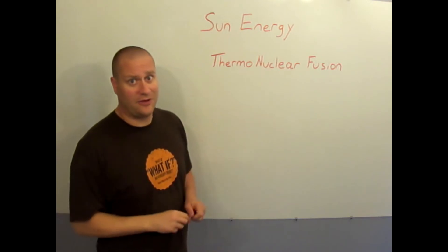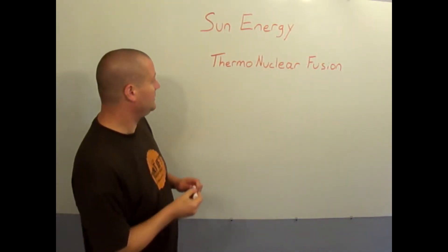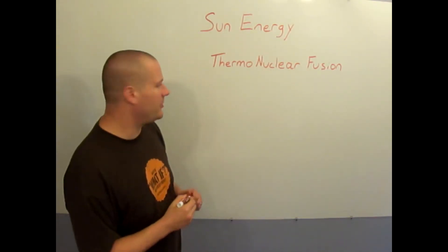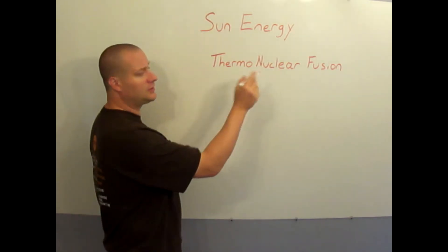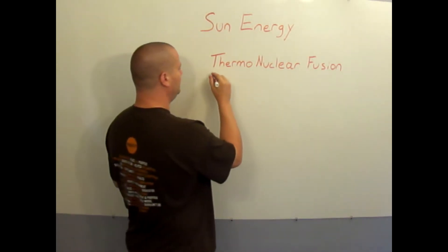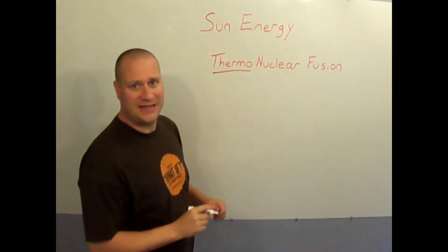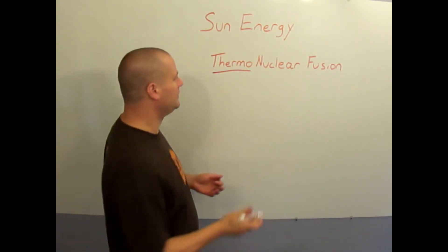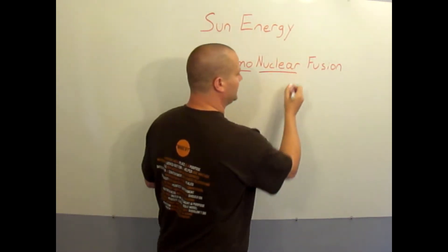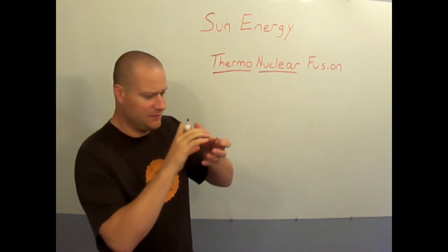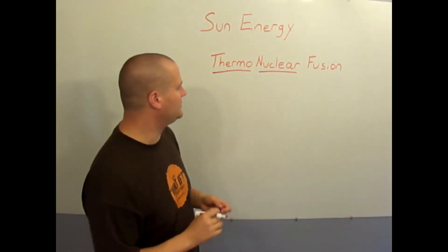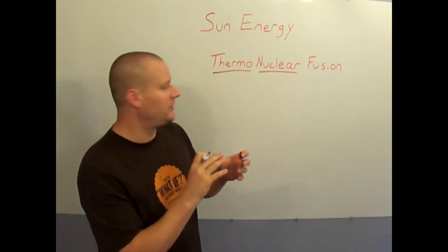So where does the sun get all this energy you might wonder? Well it's a little process that I do want you to memorize the name of, called thermonuclear fusion. Thermo has to do with the word heat, like thermos or thermometer. Nuclear is the center of an atom, the middle of the atom, an atom being one of the smallest structures in the universe.